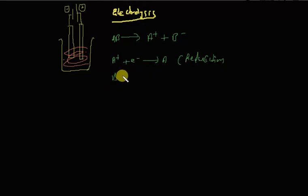Whereas, B minus loses electron to become B plus electron. It gets neutralized. This phenomenon is called oxidation.